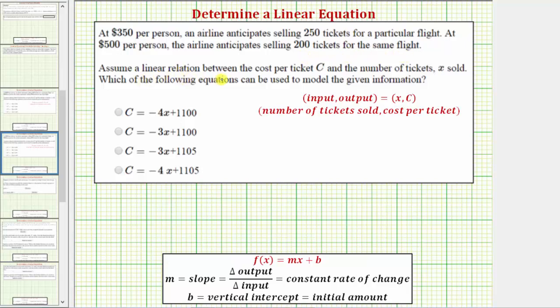Assume a linear relationship between the cost per ticket C and the number of tickets sold, X. Which of the following equations can be used to model the given information? Let's begin by writing the given information as ordered pairs. Because we're trying to write the cost C as a function of X, each ordered pair will be the input comma the output, which will be X comma C, or the number of tickets sold comma the cost per ticket.